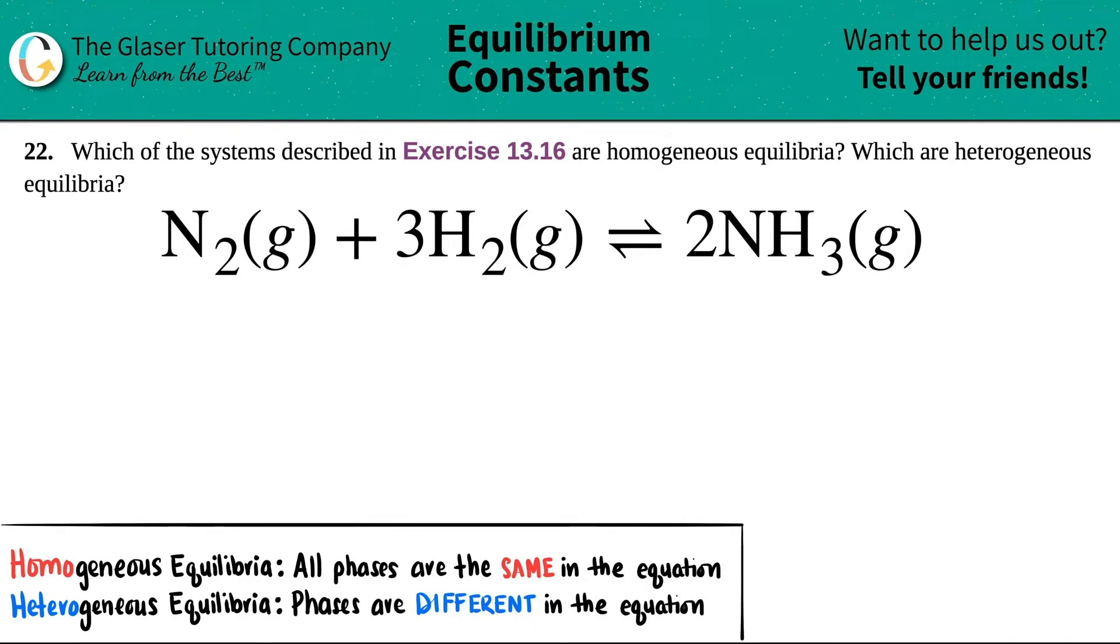Number 22, which of the systems described in exercise 13.16 are homogeneous equilibria and which are heterogeneous equilibria? Okay, so I pulled up one of the examples from that exercise list.